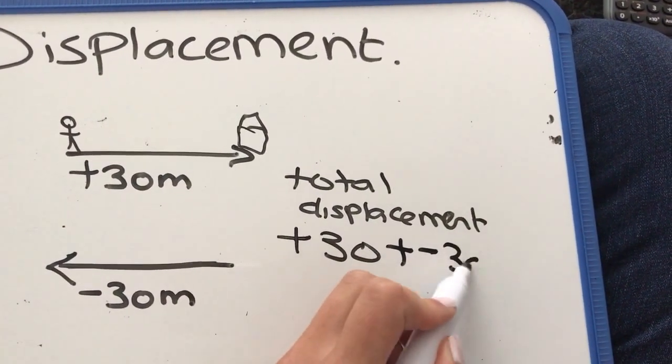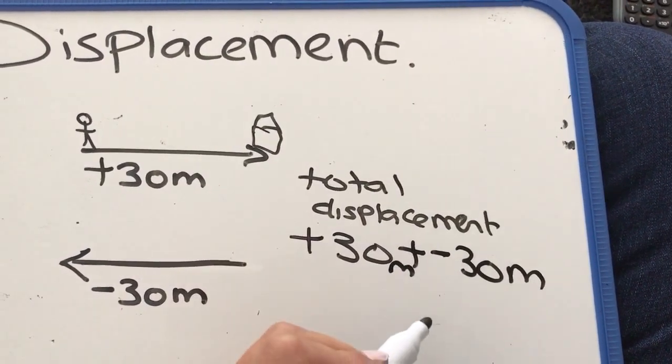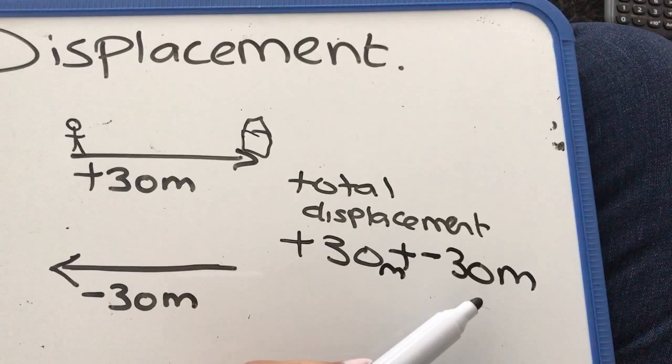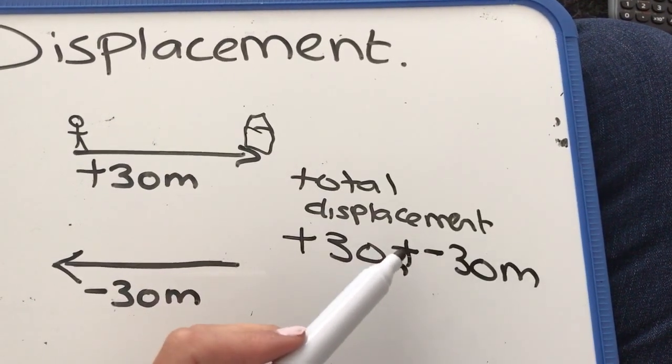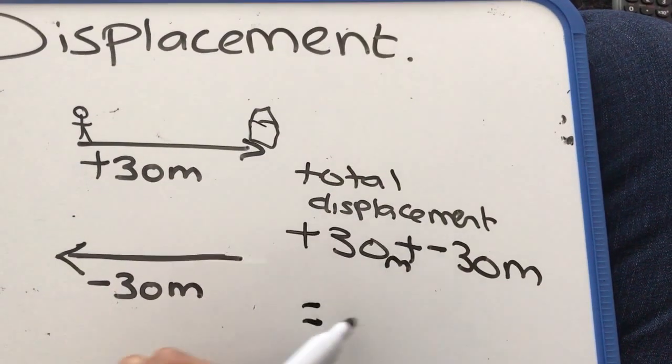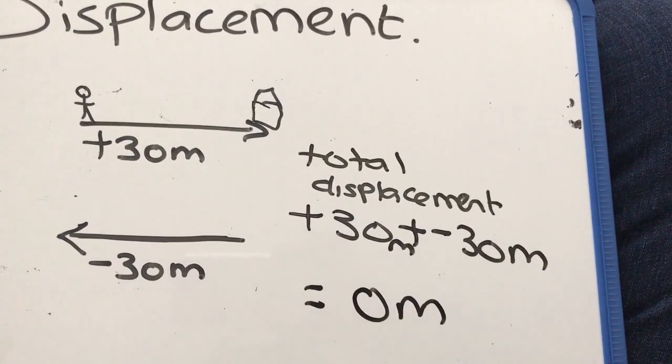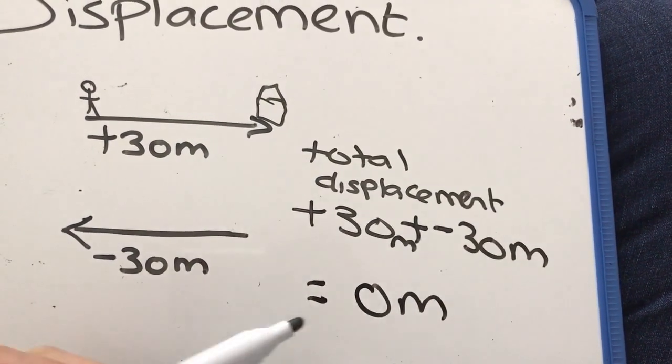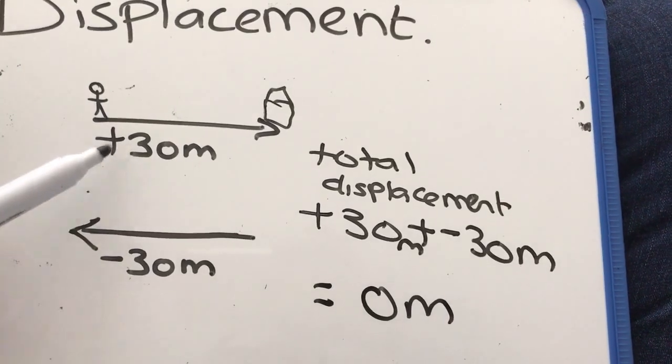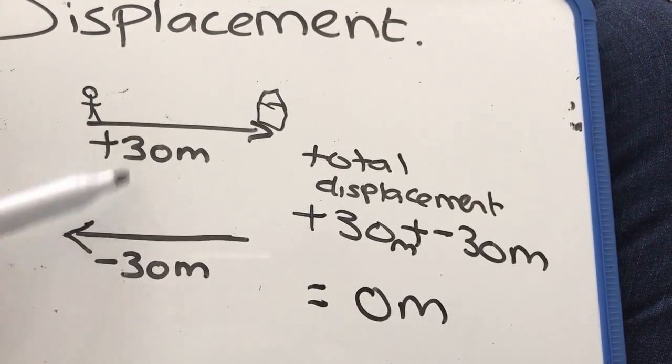So you're going to add on minus 30 metres, plus 30 metres, plus negative 30 metres, these two are going to cancel out because a plus and a minus is a negative. So 30 take away 30 is going to be 0 metres, so your return displacement is 0 metres, because displacement has a direction, so you have to take that into consideration when you're adding on the two magnitudes.